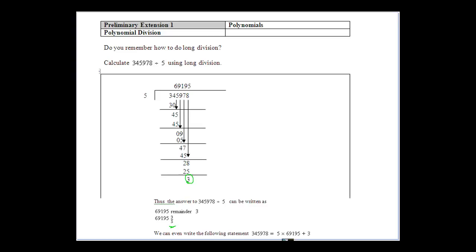So we can even write it like this, we can break it down. This is the division transformation, so 345,978 can be written as 5 times 69,195 plus 3. So that's what we call our division transformation.